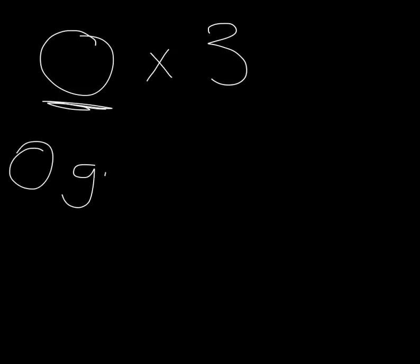What about 0? Now here, if we say 0 multiplied by 3, what we're thinking of is that we have got 0 groups of 3.